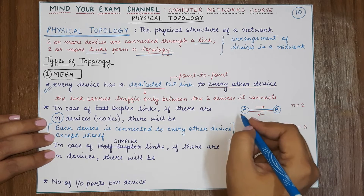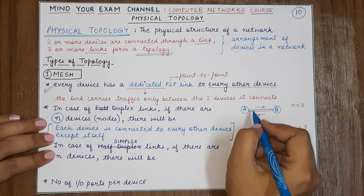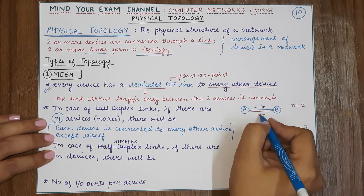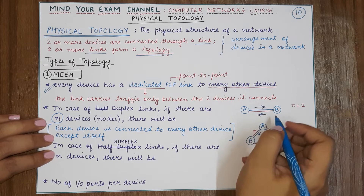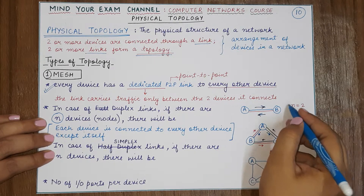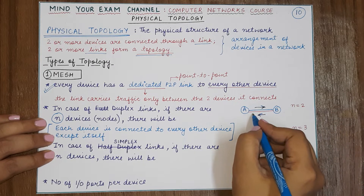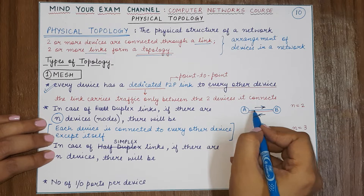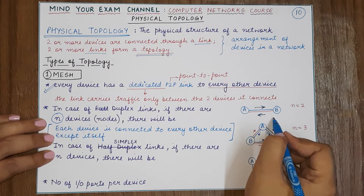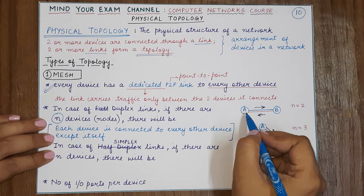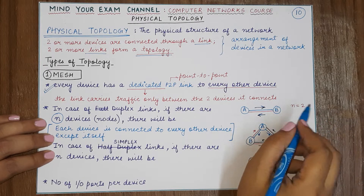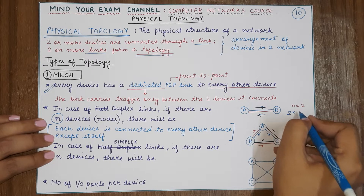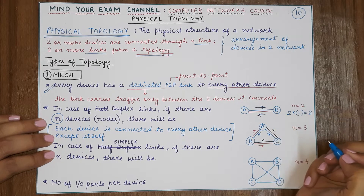Let's say there are two devices A and B. When A has a link to B it will be sending data, and when B has a link to A it will be sending data using the second link. So if n equals 2, how many links do we have? We have two links. Each device is connected to every other device, and with only one other device present, A connects to B and B connects to A, giving a total of two links.